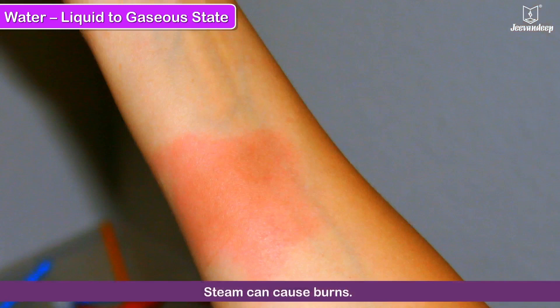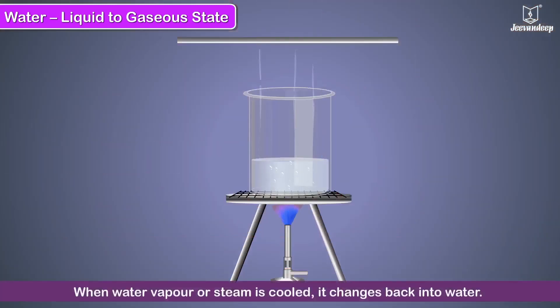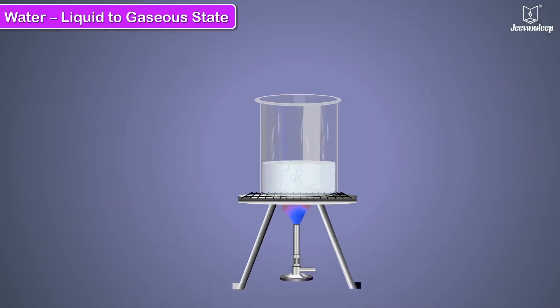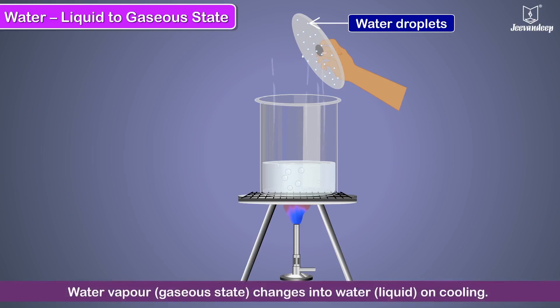Steam can cause burns. When water vapor or steam is cooled, it changes back into water. If you keep a small vessel near the steam, you will notice tiny water droplets forming inside it. Here the water vapor has changed from gaseous state to liquid state.